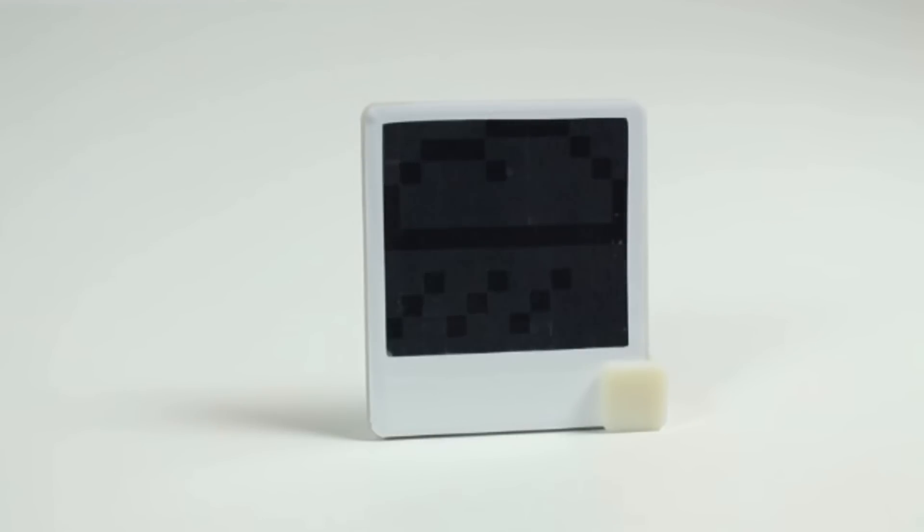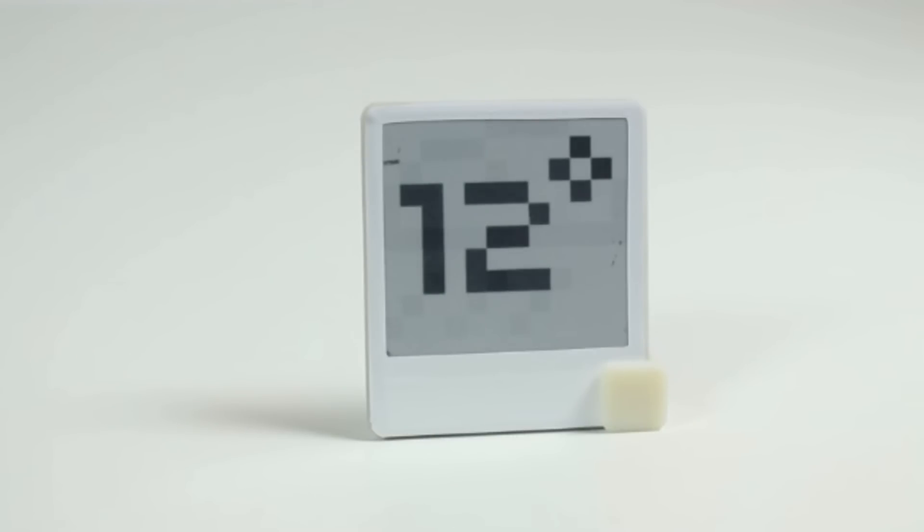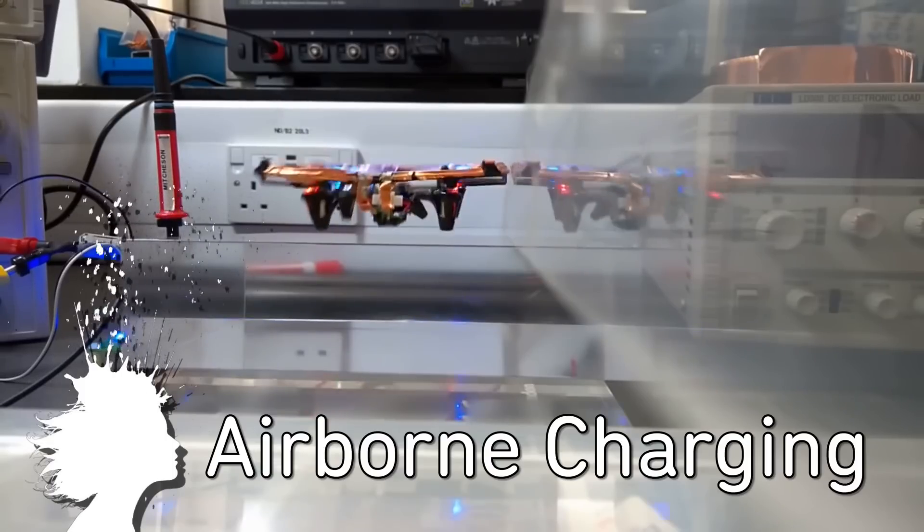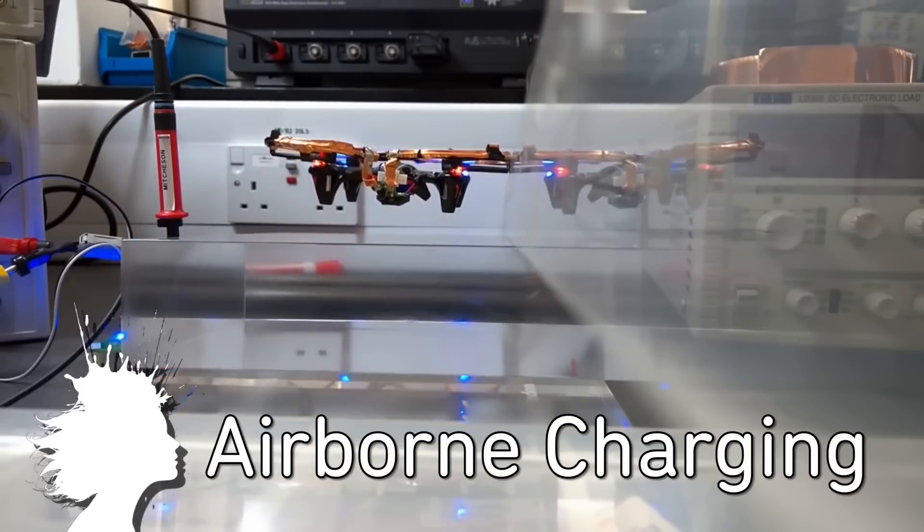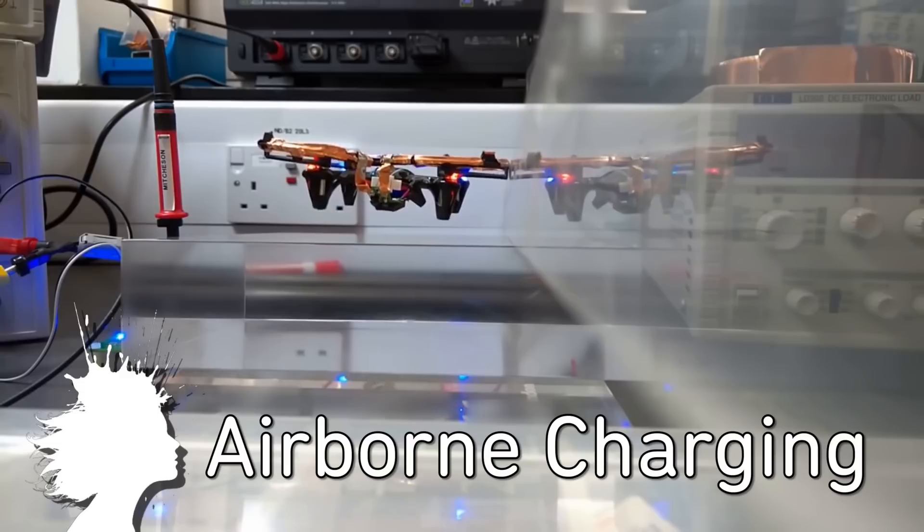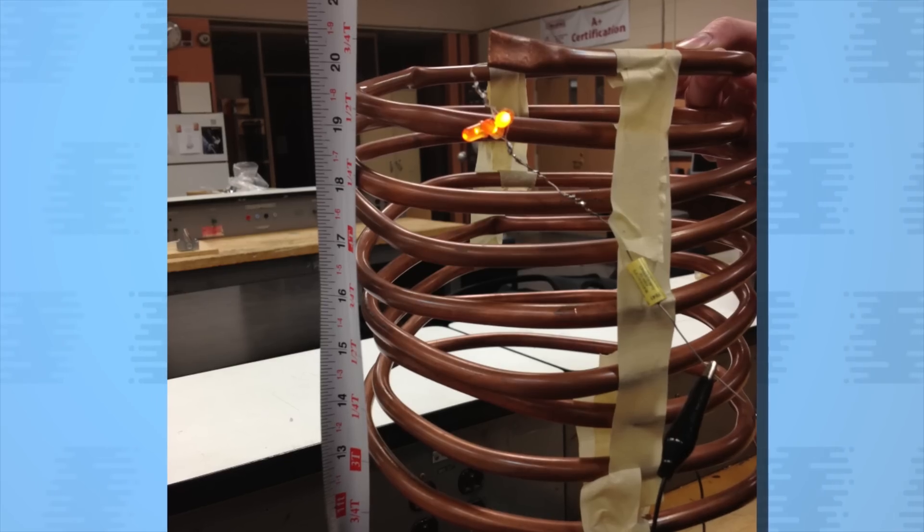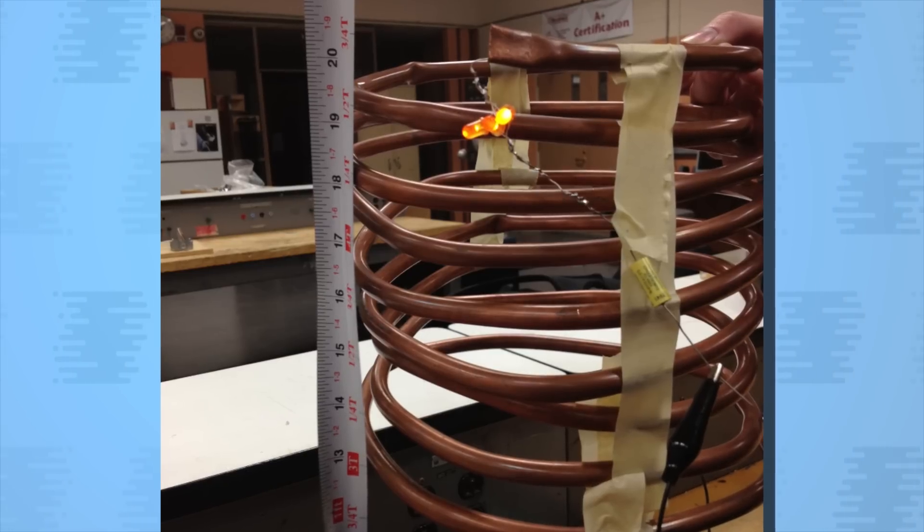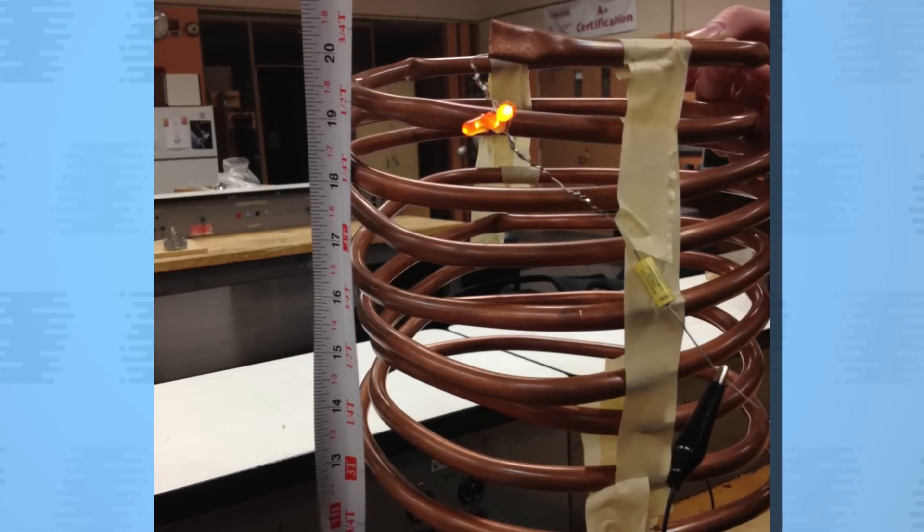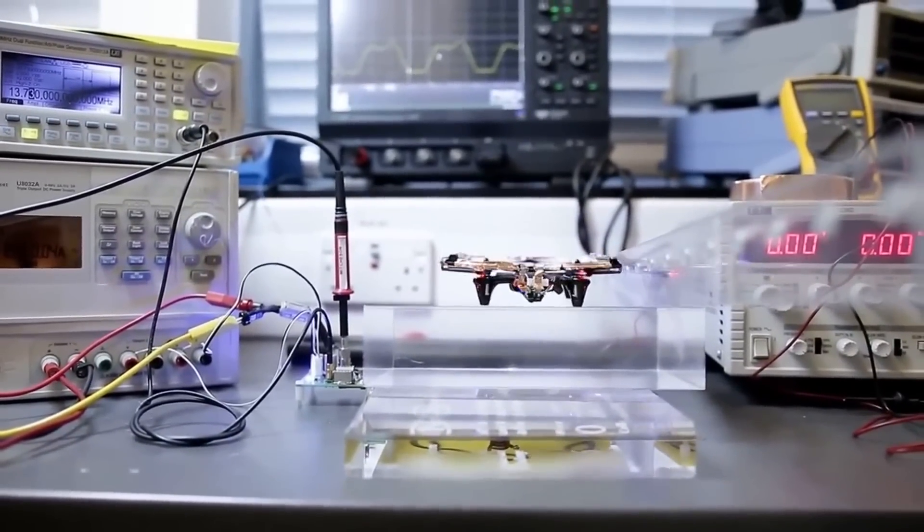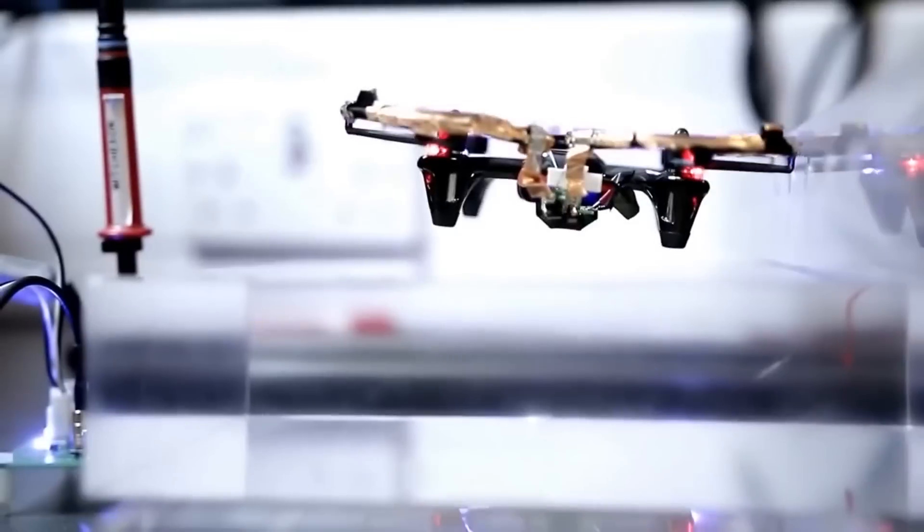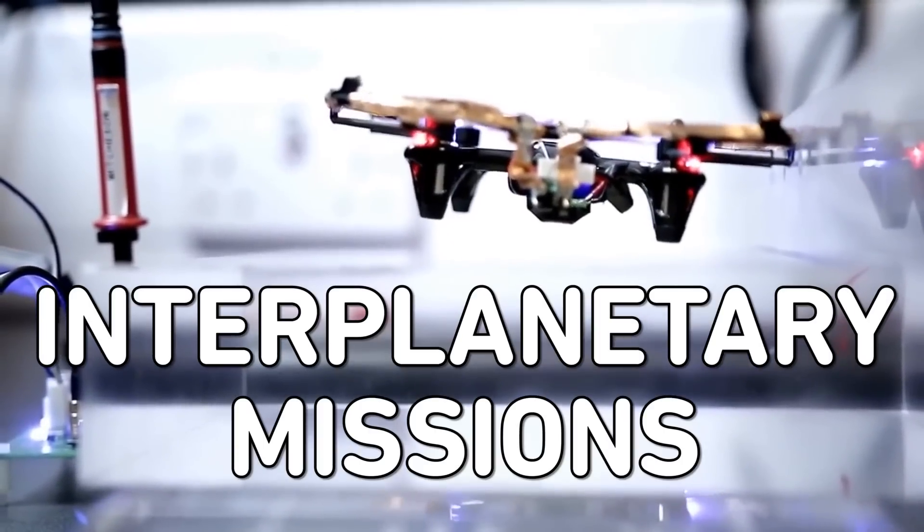Drones can be charged in mid-air using technology from Nikola Tesla. Scientists from Imperial College London used inductive coupling demonstrated by Tesla which allows for wireless exchange of power between copper coils. They're about a year away from making this commercially available and say that this technology could also be used in healthcare devices as well as interplanetary missions.